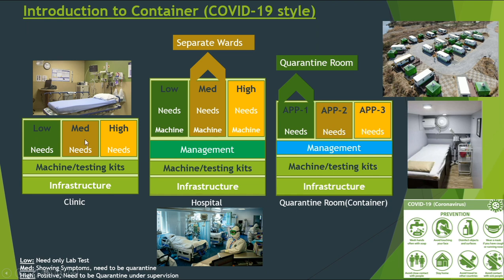Second is medium — he is showing symptoms, got tested but is negative, not positive. The doctor will advise him to stay 14 days in quarantine at home. Third is high — the critical ones who are positive and have to be in quarantine under supervision of doctors inside a hospital or some other facility.